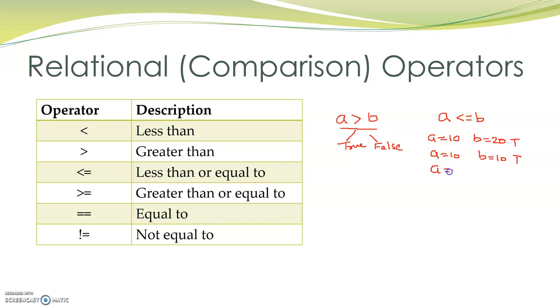Otherwise, if we have a equal to 20 and b equal to 10, then a is neither less than b nor a is equal to b. In such a case, the expression will return a value false.